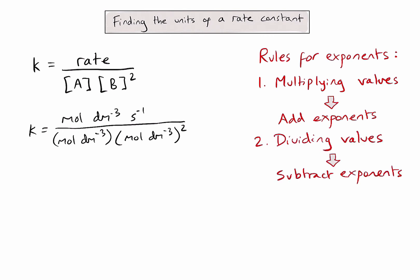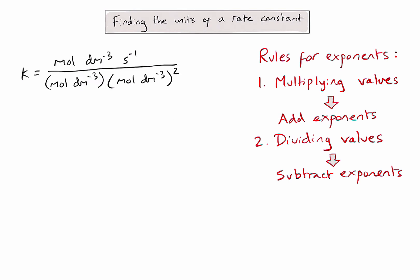Let's now try and simplify my expression for k by dealing with all of these units. Firstly, let's try and simplify the units on the bottom of my equation. Here I have moles per decimetre cubed, multiplied by moles per decimetre cubed, multiplied by moles per decimetre cubed.